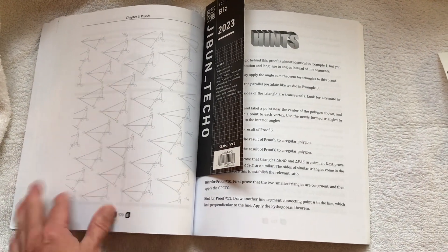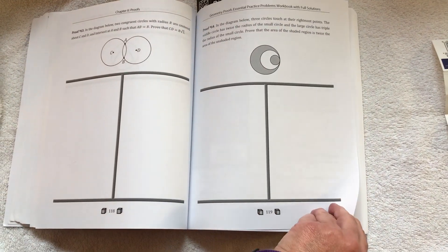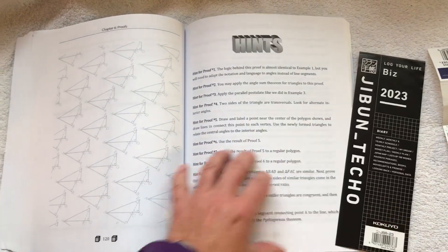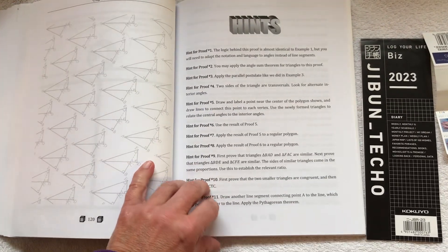Up until you get to page 120, 119 is where the proofs end. And then you have the answer keys, the hints.